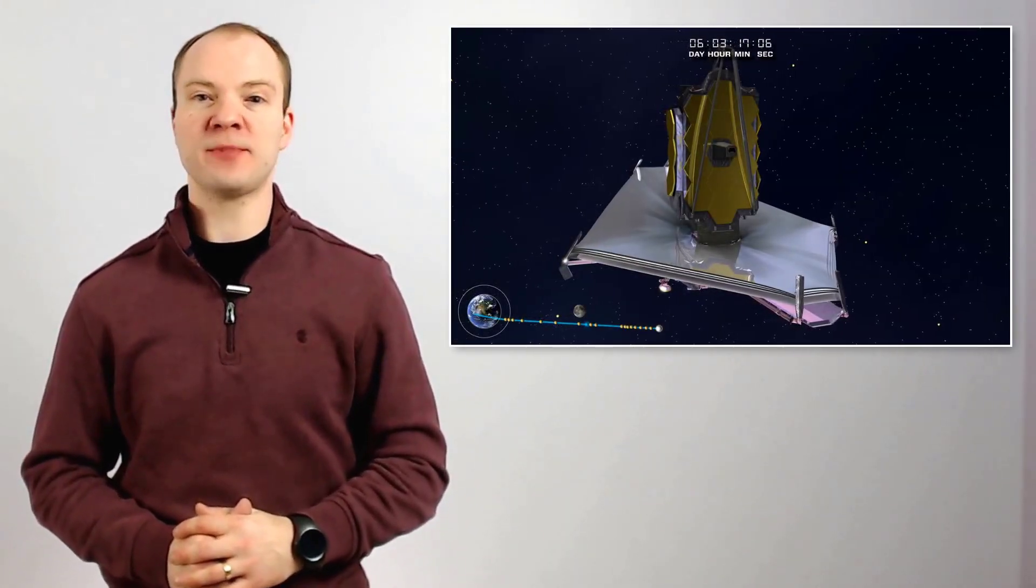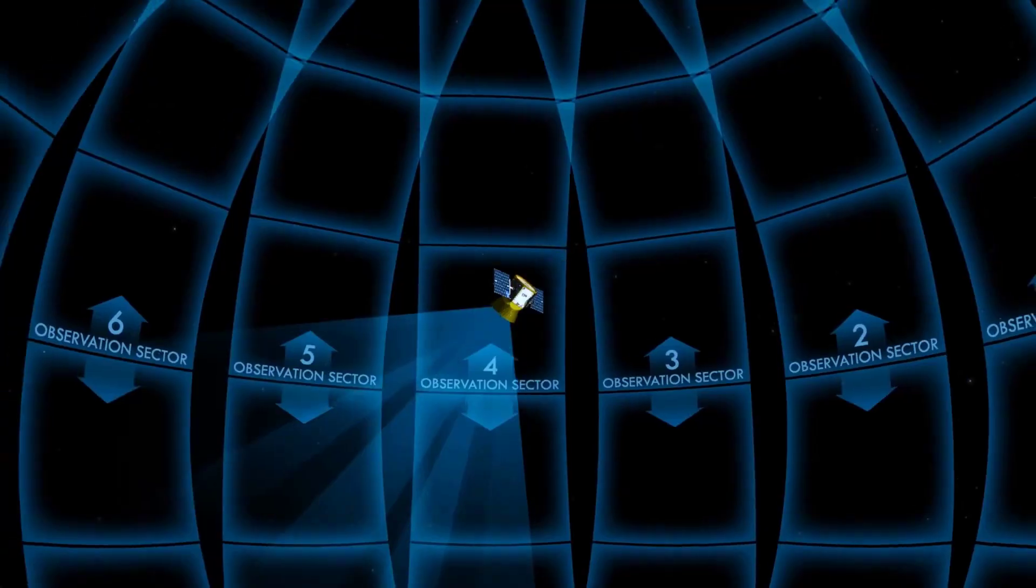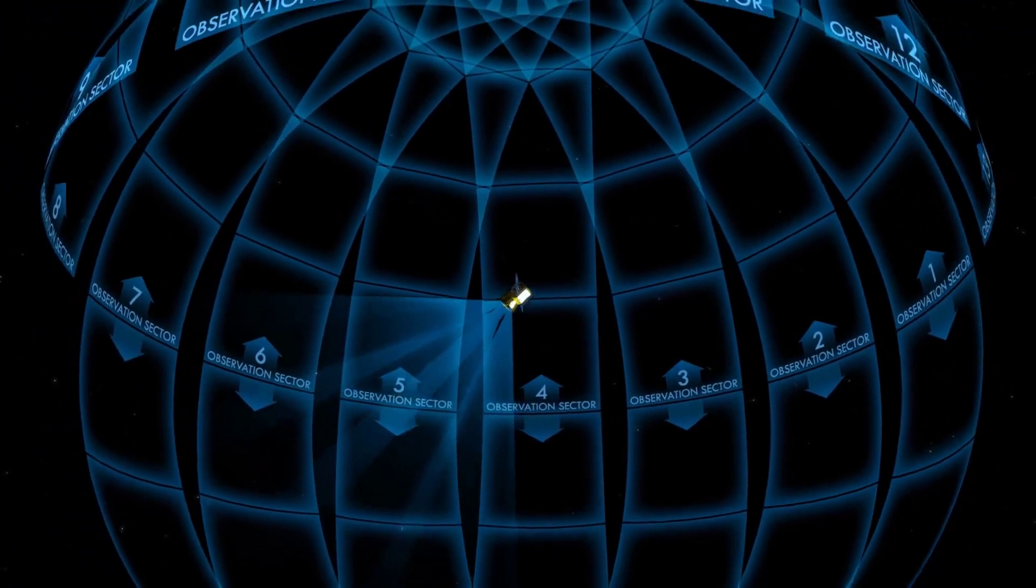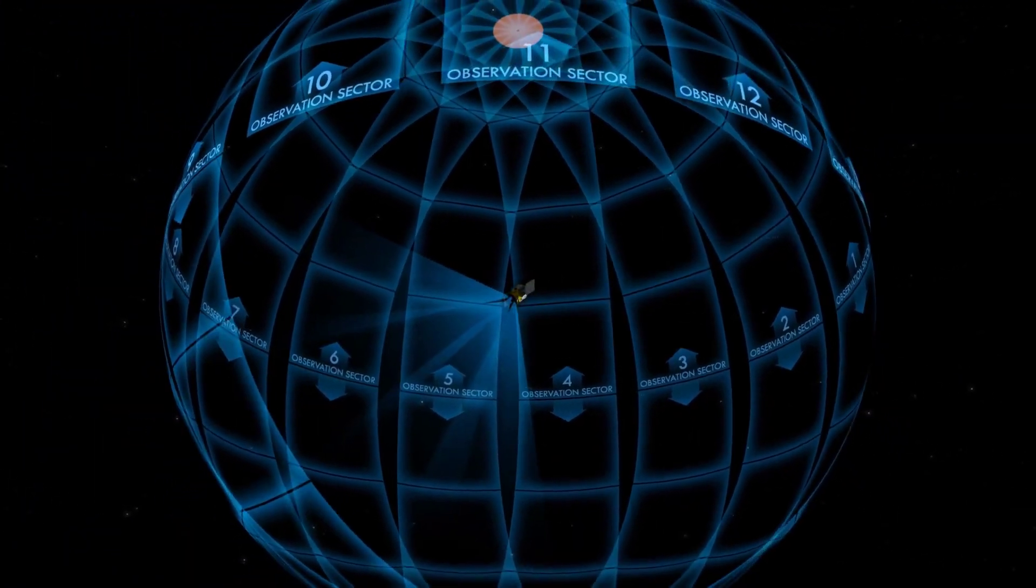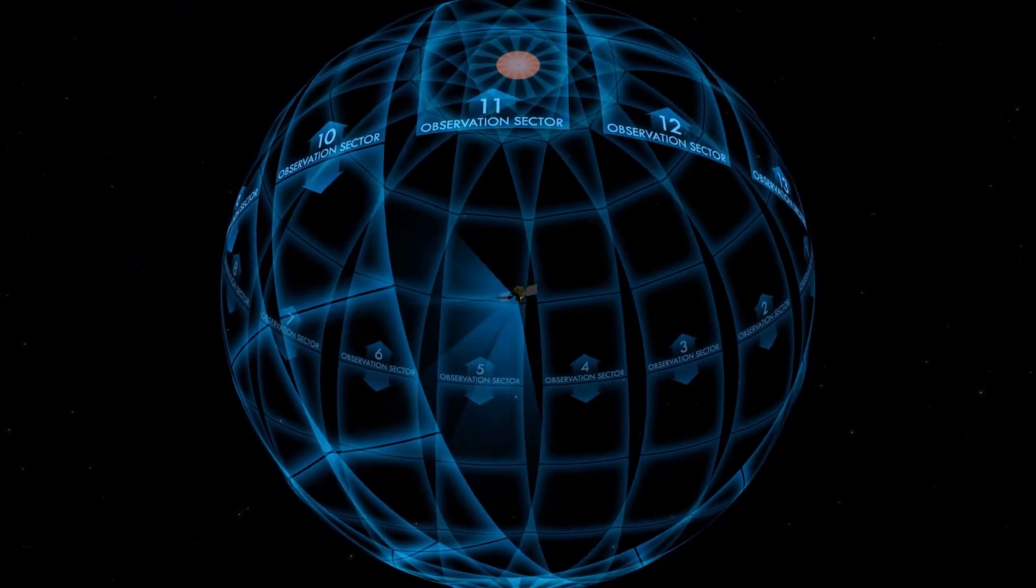This mission is essentially a precursor for the upcoming James Webb Space Telescope. TESS will survey the sky to locate potential candidates for the JWST to look at, which is 100 times more powerful than the Hubble Telescope.